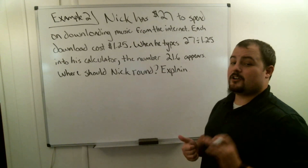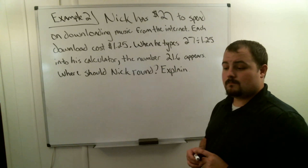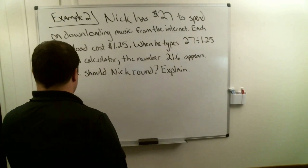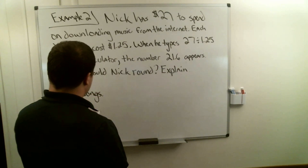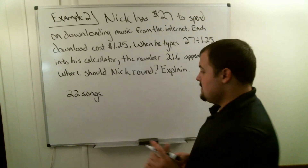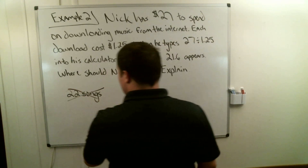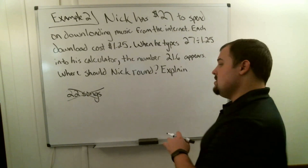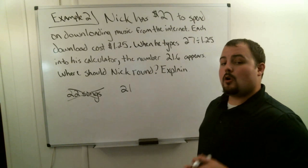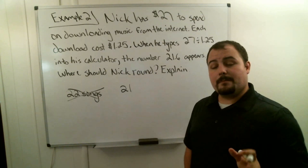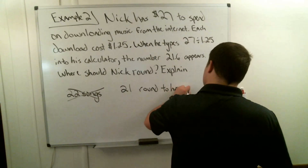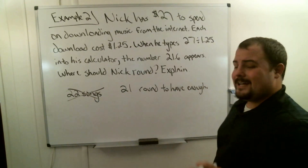Think about money and the fact that it costs $1.25 to download each song. If you were thinking he should round up, that means he could download 22 songs at $1.25 a piece — but does he have that much money? No. Since he doesn't have enough money, he cannot download 22 songs, so rounding up is not the right answer. He should download 21 songs, because he will have enough money and won't go over his $27 budget. He must round down to have enough.